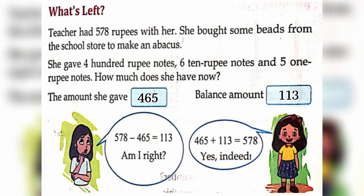So, we get the answers by minusing. That is, 578 minus 465 is equal to 113.